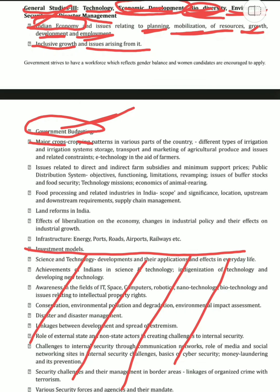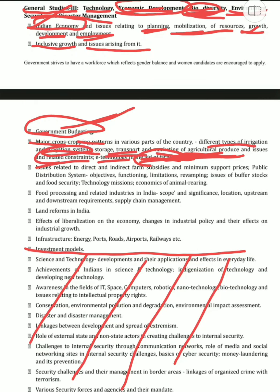Then we have major crops, their cropping patterns, different types of irrigation, the irrigation system, storage, transport, marketing of agricultural produce and related constraints, technology, and aid to farmers. Farmers appear in Indian society, in Indian history as peasants, and also in social welfare schemes — so farmers and agricultural produce are important because most of India's population is heavily dependent on agriculture. When we study major crops, we link it with geography since both syllabi cover crops, giving us an analytical view from both sides.